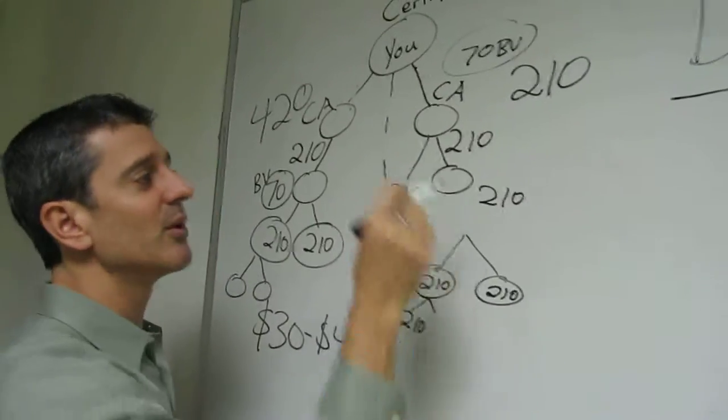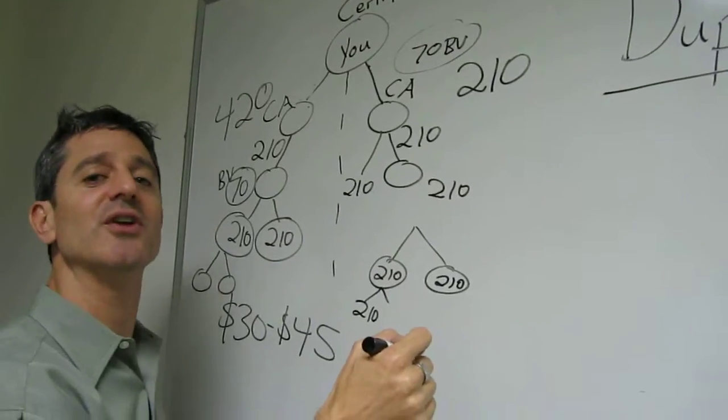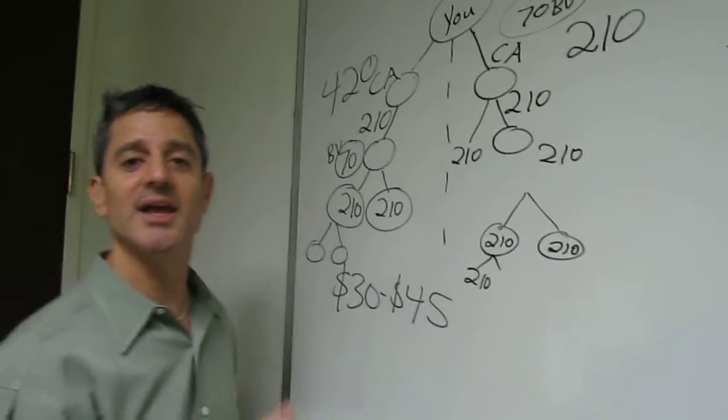And they will learn that when they bring in their third, fourth, fifth, sixth that are worth 70, they teach them that their first two are certified affiliates. So they start that 210, who get 210, who get 210, keeps going in perpetuity.